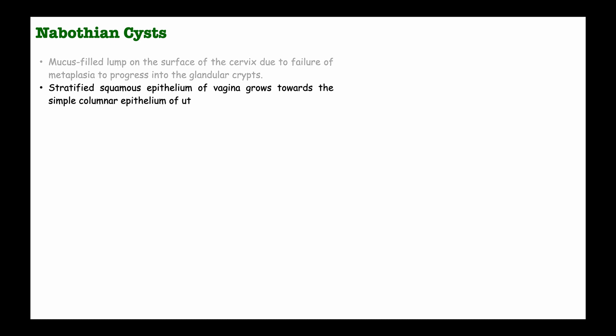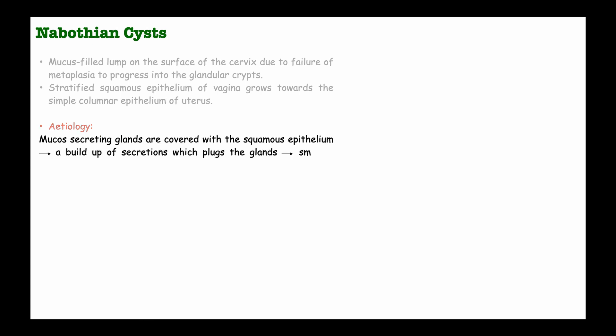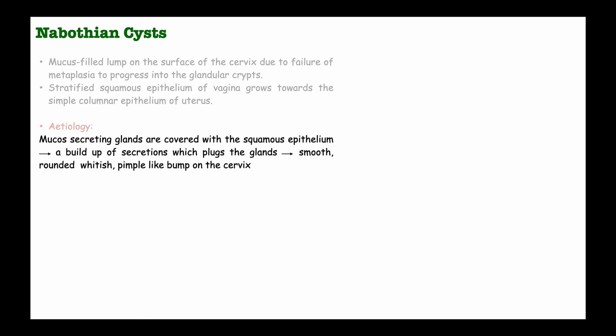The stratified squamous epithelium of the vagina gradually grows towards the simple columnar epithelium of the uterus. In this condition, mucus-secreting glands become covered with squamous epithelium, leading to a buildup of secretions that plugs the glands, resulting in smooth, rounded, whitish pimple-like bumps on the cervix.